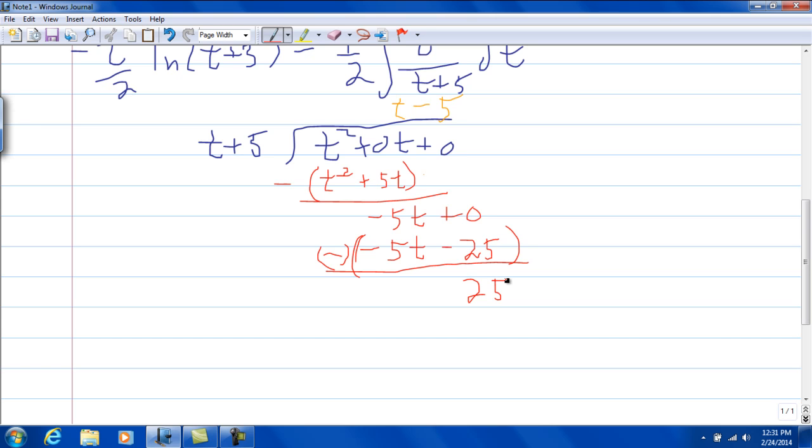And this gives us the result that t squared over t plus 5 is equal to t minus 5 plus 25 over t plus 5.